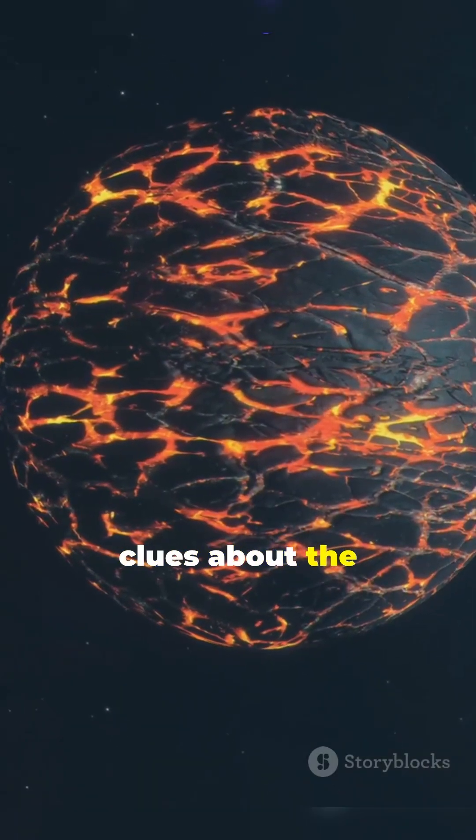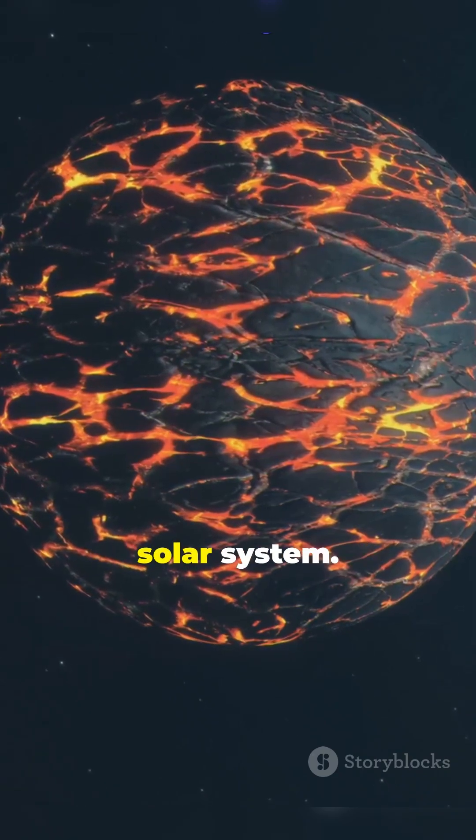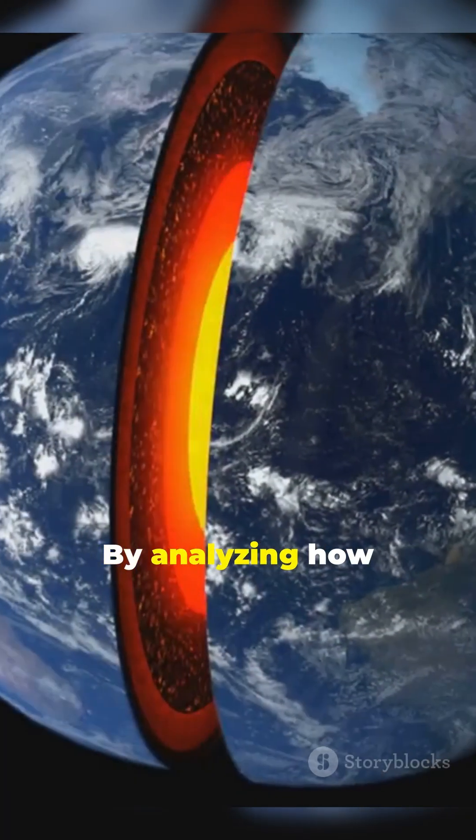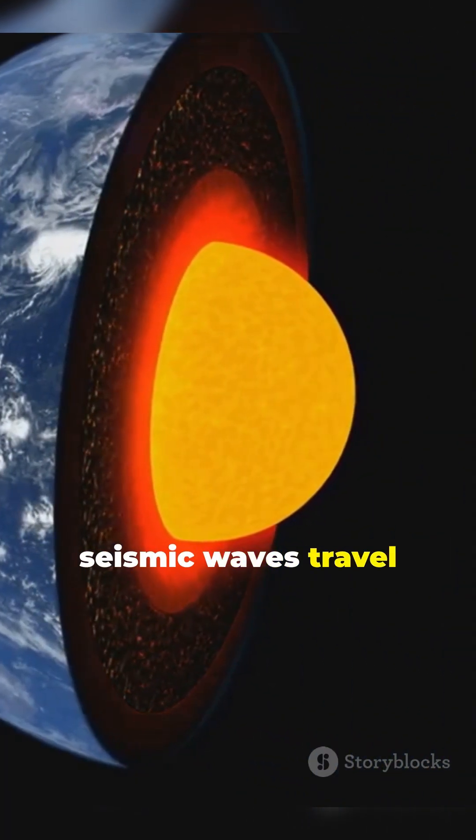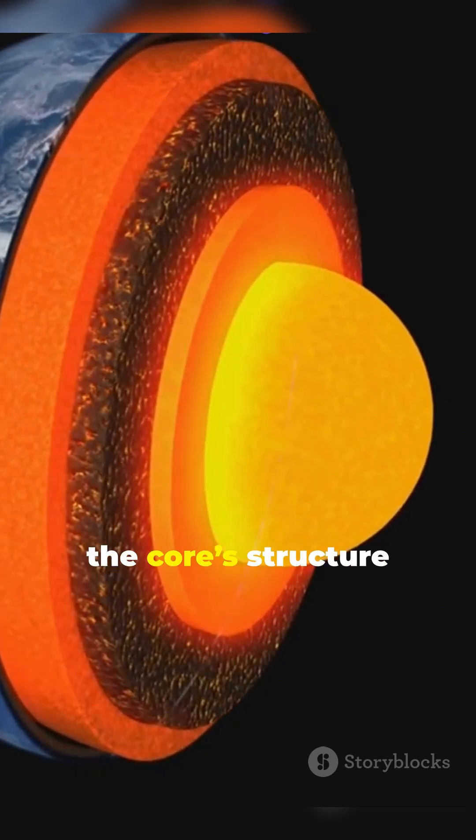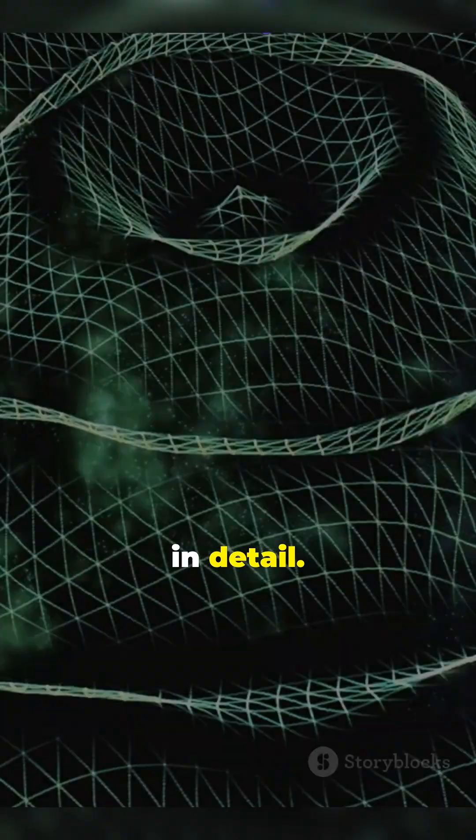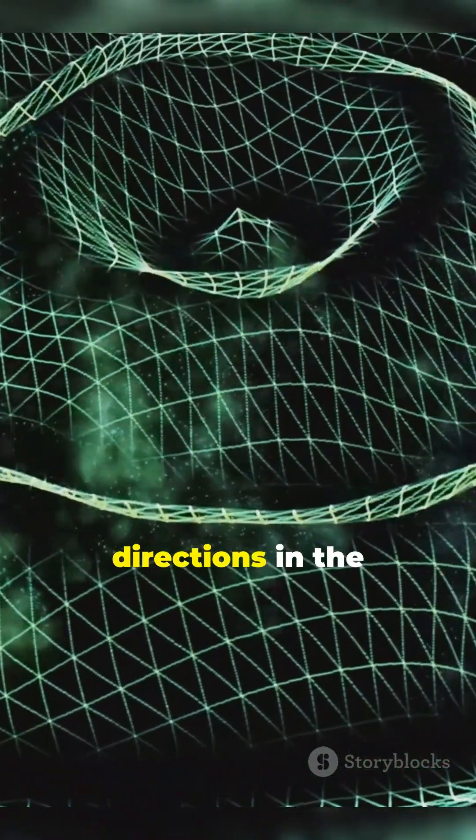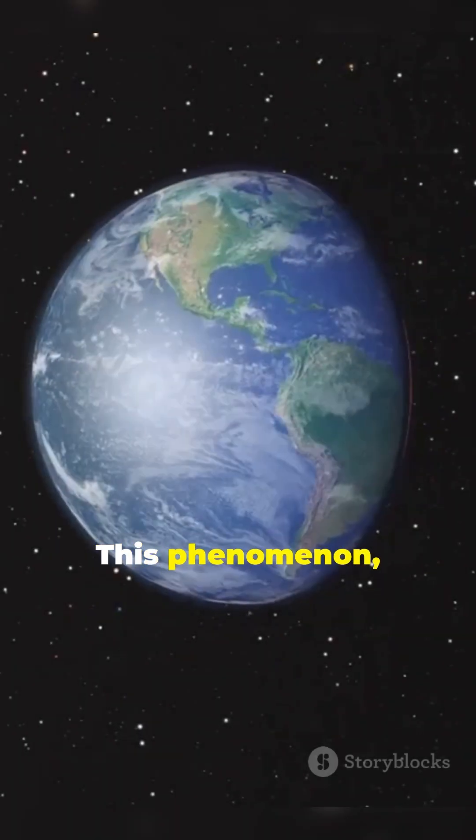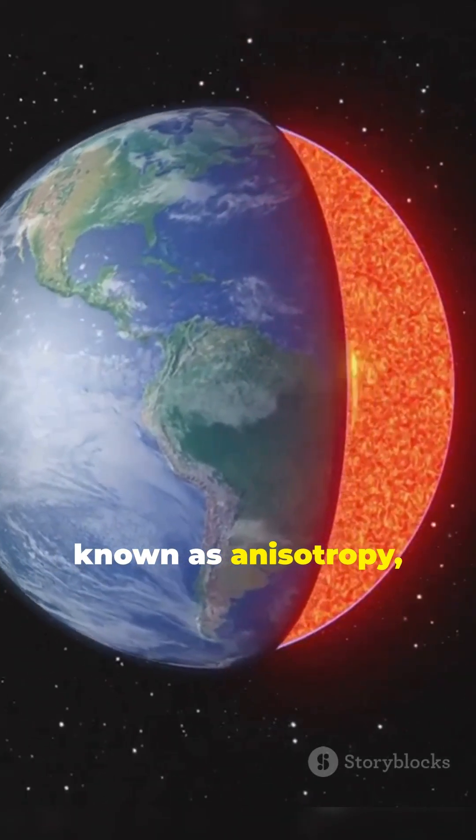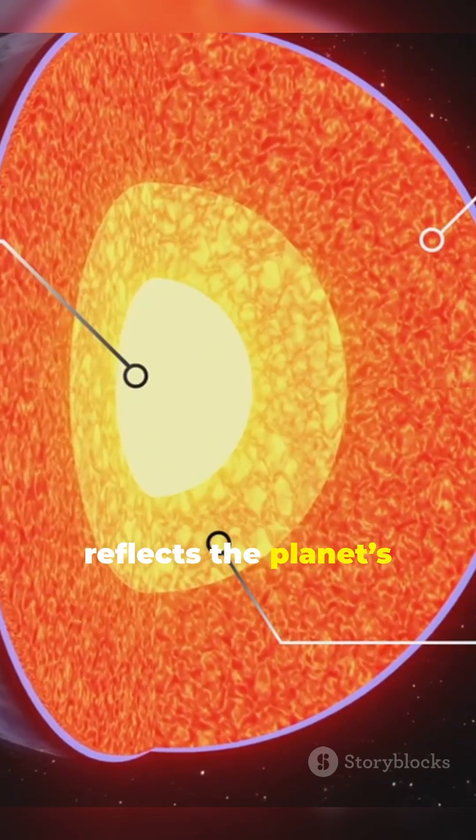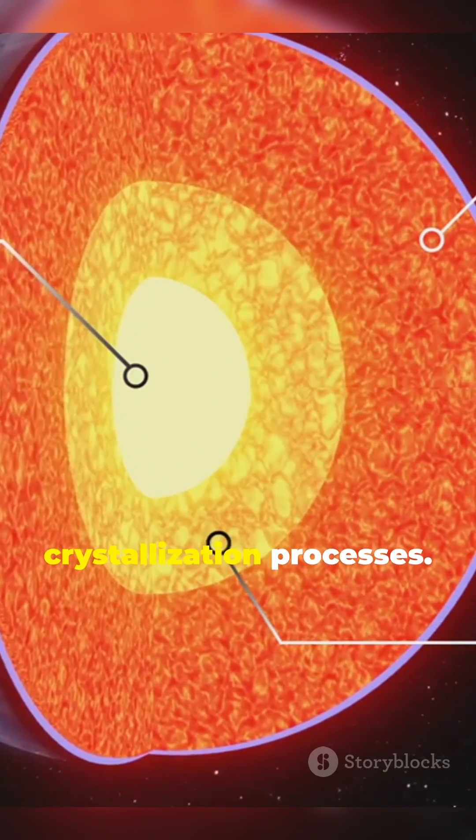Speaking of seismic behavior, earthquakes have provided scientists with a unique way to study the core. By analyzing how seismic waves travel through the Earth, researchers can map the core's structure in detail. Recently, scientists discovered that seismic waves move faster along certain directions in the inner core. This phenomenon, known as anisotropy, suggests that the core is not only layered, but also aligned in a way that reflects the planet's long-term cooling and crystallization processes.